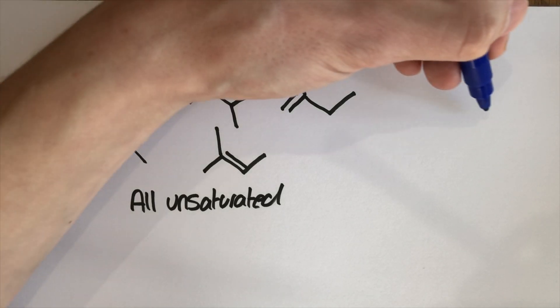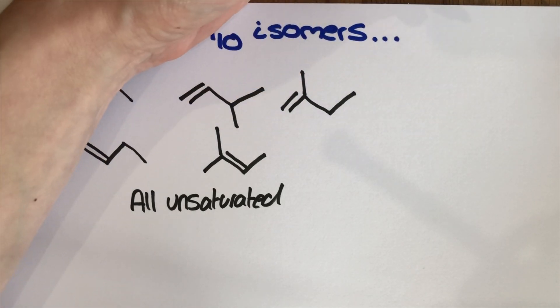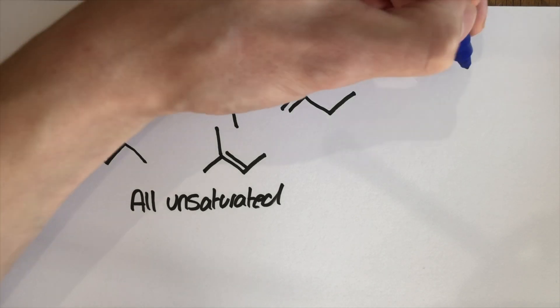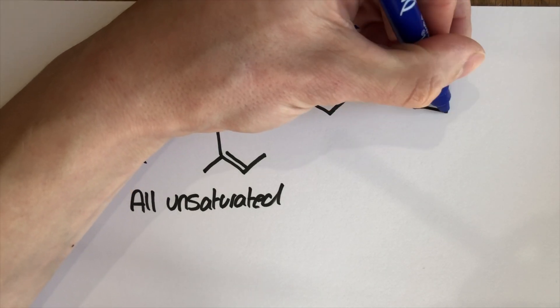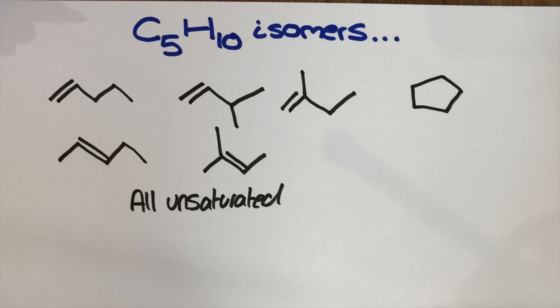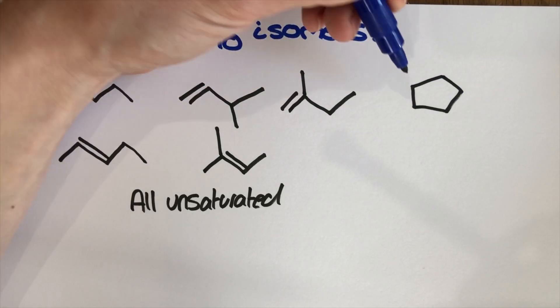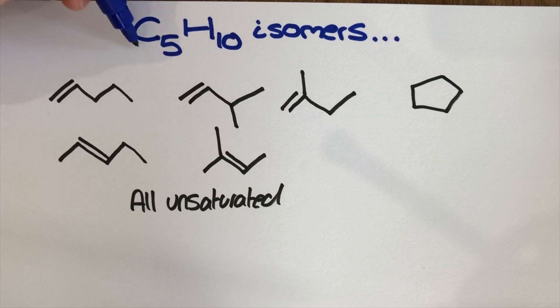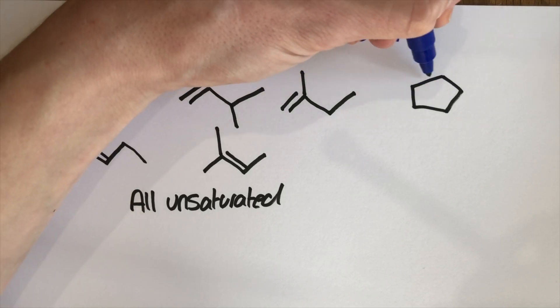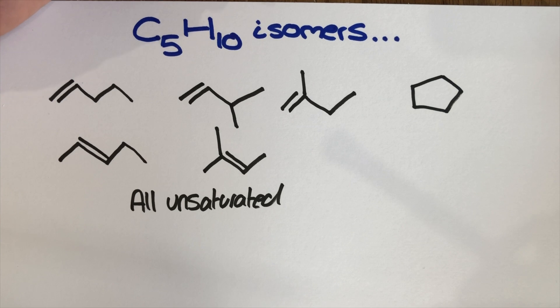Now an alternative functional group to consider would be instead of having a double bond if I had something like this which is cyclopentane. Notice that there's no double bond anymore at all but it would still have the formula C5H10. So this is an example of a structural isomer as well but it's also got a completely different functional group so its reactivity is totally different.